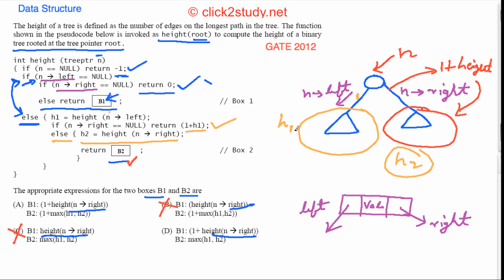Now we have h1 as the left subtree height and h2 as the right subtree height. We need to add 1 for each edge and take the larger path, so B2 should return 1 + max(h1, h2). The option without the 1 can be eliminated, confirming that B2 is 1 + max(h1, h2) and option A is the correct answer.